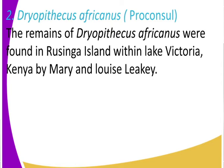Now, Aegeopithecus africanus is also called Proconsul. So if you see the term Proconsul, it is another term used instead of Aegeopithecus africanus. The remains of Aegeopithecus africanus were found in Rusinga Island within Lake Victoria. Rusinga Island is within Lake Victoria, and an island is a piece of land that is surrounded by water. So in Lake Victoria we have this island, we call it Rusinga Island.